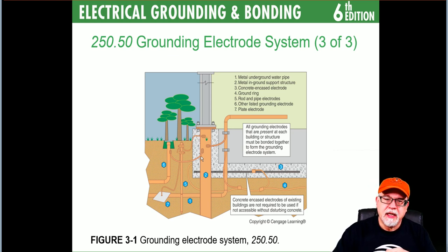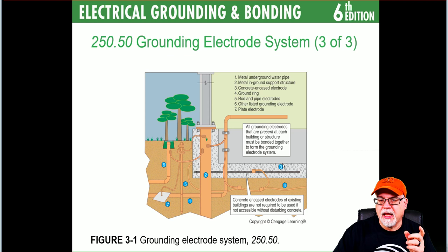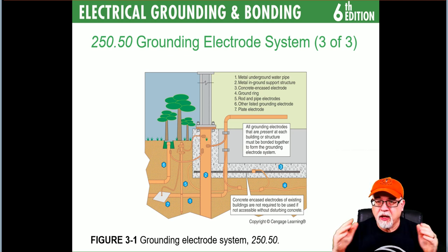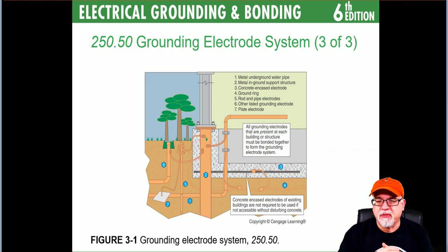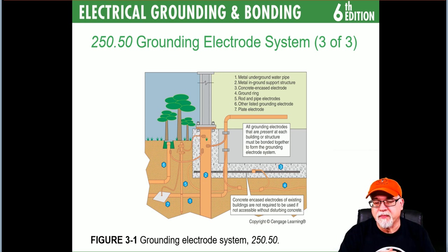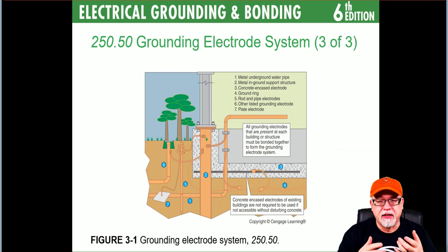The third type is the concrete encased electrode — 20 feet of half-inch rebar in the footer in contact with the earth or foundation. It has to be at least 20 feet, but doesn't have to be continuous — pieces connected together with tie wires can cumulatively make up more than 20 feet. The other option is four-gauge copper placed in the footer, also requiring 20 feet.